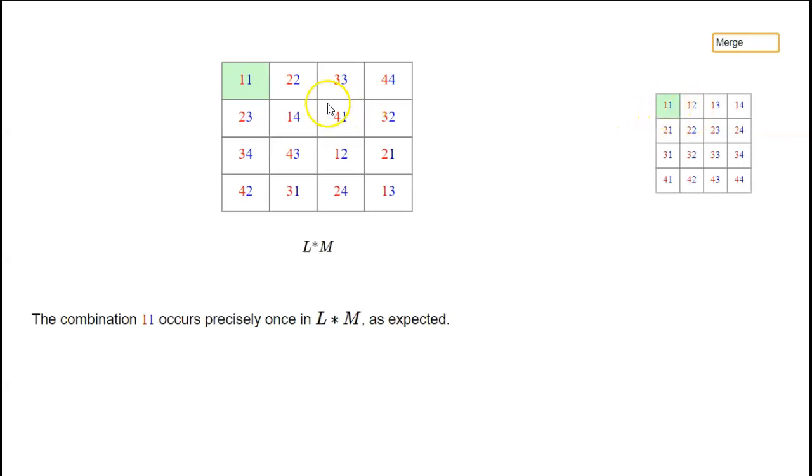Here we've highlighted 1,1, and that occurs precisely once. Then 1,2, 1,3, 1,4, 2,1, 2,2, 2,3, 2,4, 3,1, 3,2, 3,3, 3,4, 4,1, 4,2, 4,3, 4,4. All possible combinations occur precisely once in L star M.